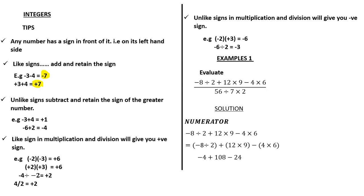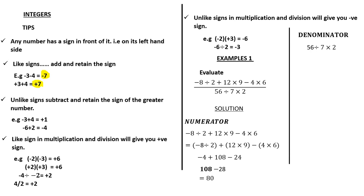Negative 4 minus 24 combines to negative 28, so we have 108 minus 28, which equals 80. That is the answer for the numerator. For the denominator: 56 divided by 7 times 2. Start with division: 56 divided by 7 is 8, then 8 times 2 gives 16. Now combine numerator over denominator: 80 divided by 16, which equals positive 5.